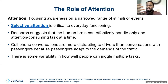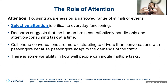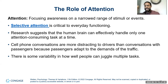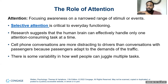Research suggests our human brain can effectively only handle one attention-consuming task at a time. Multitasking is not actually multitasking — it's task switching. Cell phone conversations and texting while driving distract us; we pay attention to one thing and miss details like the color of a passing car or traffic lights. There is some variability in individuals' ability to juggle tasks, but for the vast majority it's still very difficult.